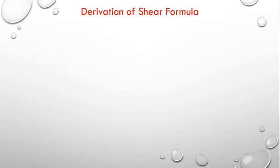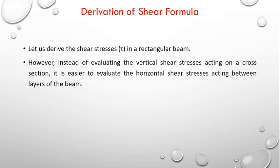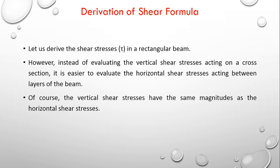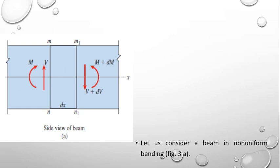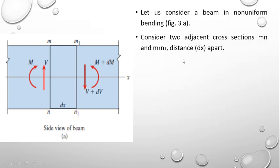Now let us see the derivation of the shear formula. Instead of evaluating vertical shear stresses acting on a cross section, it is easier to evaluate the horizontal shear stresses acting between the layers of the beam. Of course, the vertical shear stresses have the same magnitudes as the horizontal shear stresses. Consider a beam in non-uniform bending, where there is both shear force and bending moment. Consider two adjacent cross sections MN and M1N1 at a distance dx apart, drawing along the length of the beam.